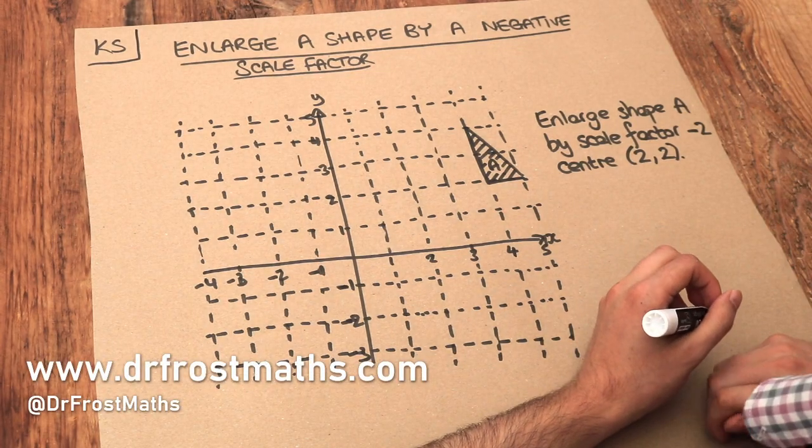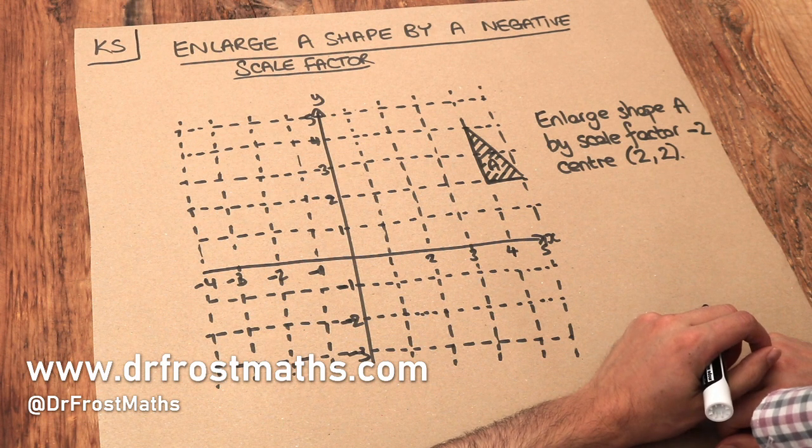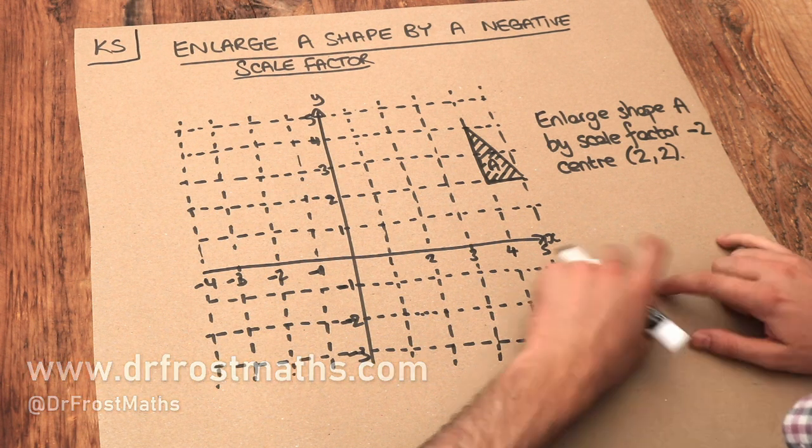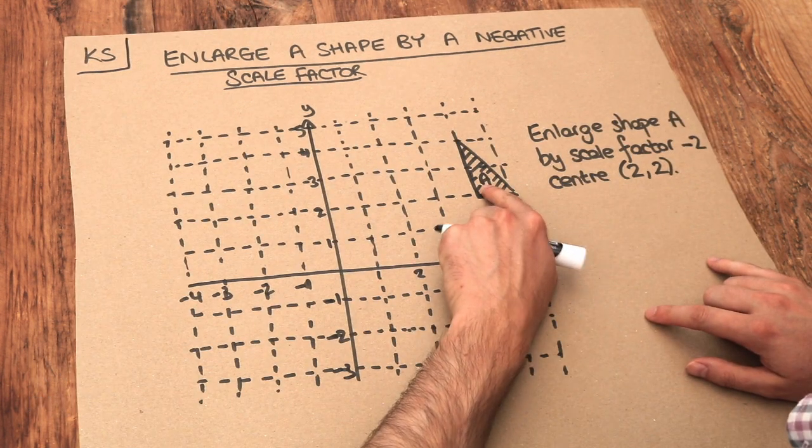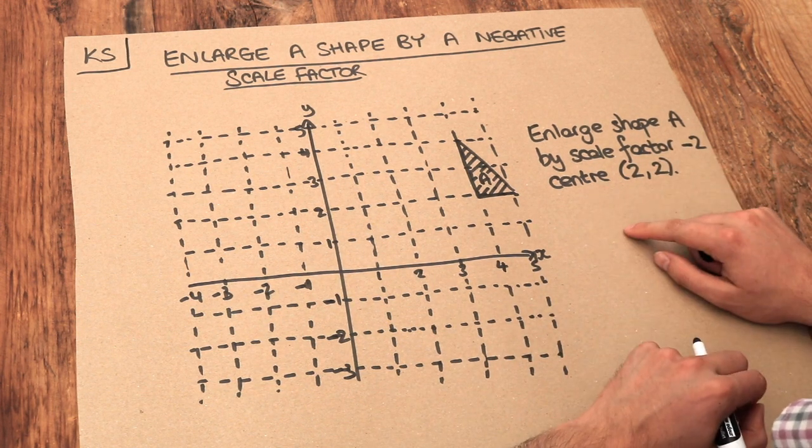Hello and welcome to this Dr. Ross Math's key skill video on enlarging a shape by a negative scale factor. So we want to enlarge this shape A by a scale factor of negative 2 with a centre of enlargement 2, 2.